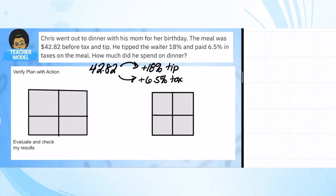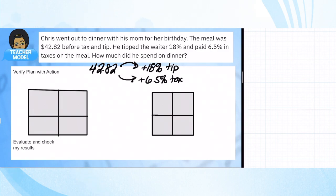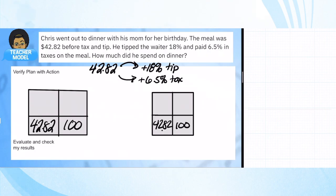Here's our last problem in this unit for guided practice. We have two things happening: the price of the meal, and we're adding a tip and tax, but these are both percentages of the original number. When figuring out the tip, we're finding 18% of what you spent. For the tax, it's also on what you spent. So we're going to find these two separate numbers and add them to $42.82 later.